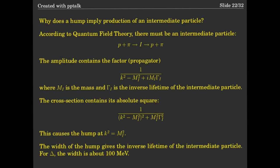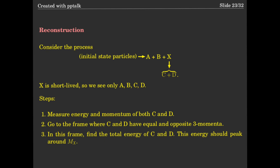This is one way to find short-lived particles. Another way: suppose initial state particles create A, B, and a very short-lived X, and X decays into C and D. You do not see X directly. You measure the momentum and energy of C and D, calculate in which frame their total momentum is zero, and in that frame the energy of C and D together gives you the mass of X. I am not going through all details — you use charges, masses, or other distinguishing properties to identify which particles came from X.